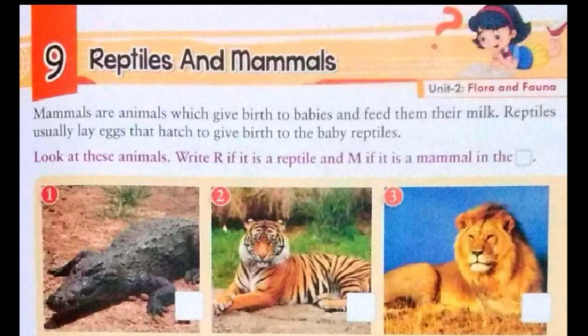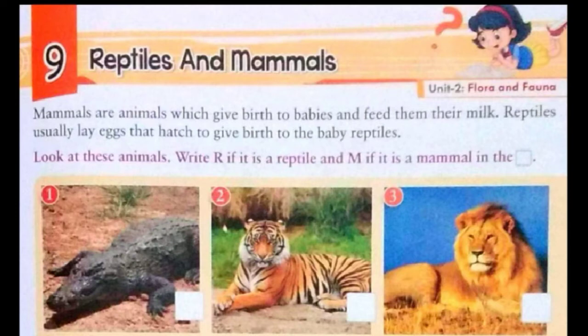Now we will start our exercise number 9 given on page number 9, that is reptiles and mammals. What are mammals? Mammals are animals which give birth to babies and feed them their milk. And reptiles? An animal that crawls or moves on its belly or on small short legs. They usually lay eggs that hatch to give birth to baby reptiles. In this exercise we have to look at pictures and write R if it is a reptile and M if it is a mammal.